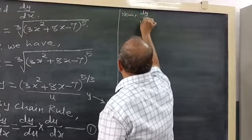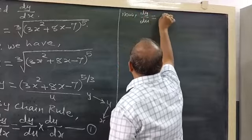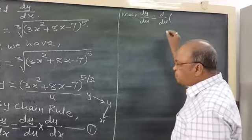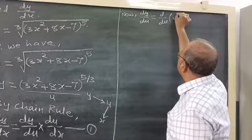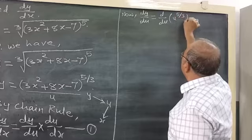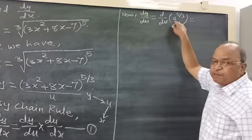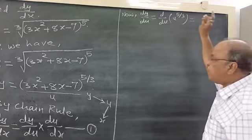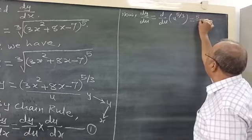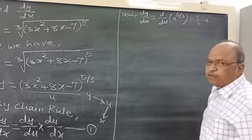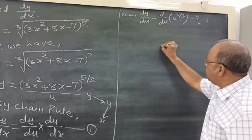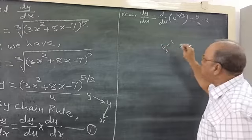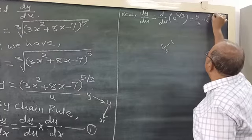dy by du is the derivative of y with respect to u. y in terms of u is u raised to the power 5 by 3. Using the power rule — bring the power to the front, multiply by the variable raised to power n minus 1 — this gives 5 by 3 into u raised to the power (5/3 - 1), which is 5/3 - 1 = 2/3. So dy by du = (5/3) u raised to the power 2 by 3.